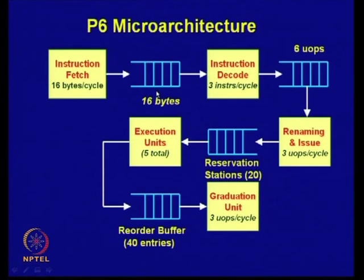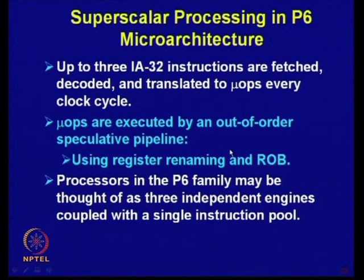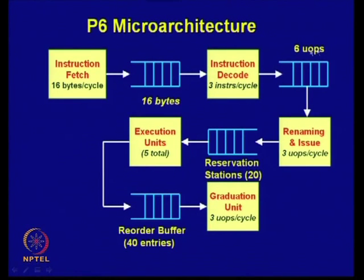From the instruction queue, three instructions per cycle go to the instruction decode unit. Three instructions are decoded and converted into micro-operations. Three instructions can lead to six micro-operations, which are sent to the renaming and issue unit. Three micro-operations per cycle is the rate at which they proceed.